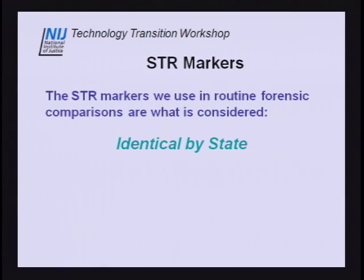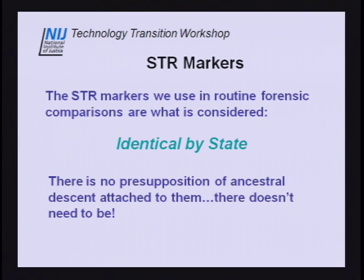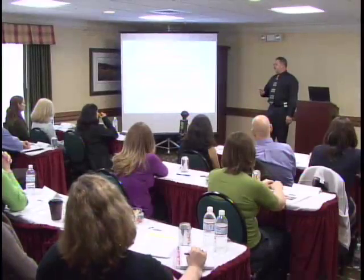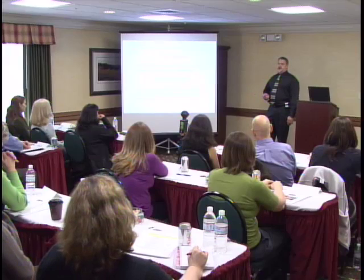The way we use STR markers right now, we're looking at these alleles as being identical by state. They're nothing more than a number, and that number has a certain frequency, probability of occurrence in our databases. That's fine when you're doing the analysis of an evidentiary bloodstain to a suspect. There's no ideas, no connotations of ancestry or descent in these markers. We're doing an apple-to-apple comparison — these have to be the same profiles across the board. There doesn't need to be anything more than that. So for the vast majority of our work, STRs are fine the way they are.